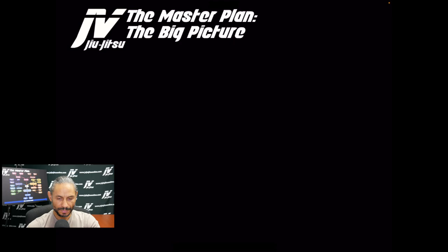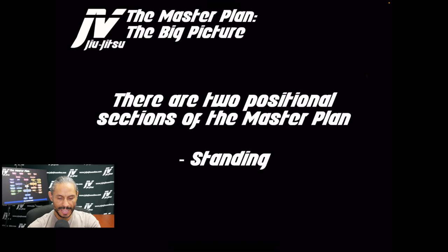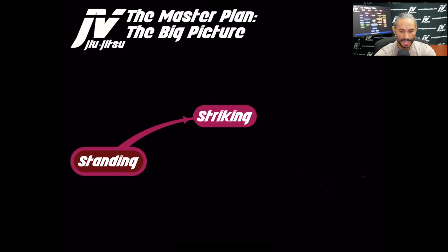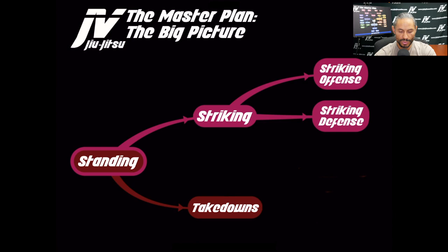Part 2 is the Positional Chapters, which I call Positional Perspectives. There are two different Positional Sections of the Master Plan: Standing and Ground. The Standing Section is broken up into two sections and four different Skill Sets — Striking and Takedowns — with Striking Offense, Striking Defense, Takedown Offense, and Takedown Defense.